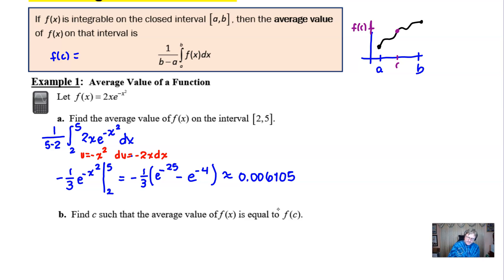That takes us to part b. Find c such that the average value of f(x) is equal to f(c). What they want is just exactly what the problem is stating. f(x) must be set equal to this f(c). So you have your 2x e to the negative x squared set equal to this 0.006105 value. And the x that we get from this is actually going to be that c value. We're just trying to find out where does it occur that we have this y value equivalent to this number.